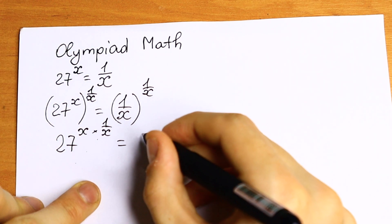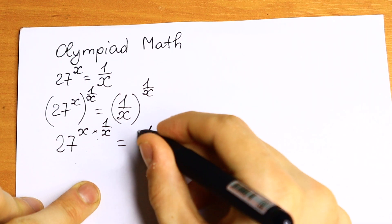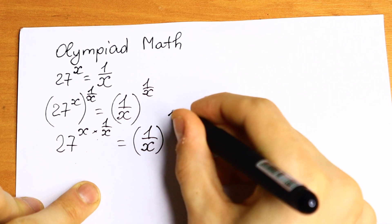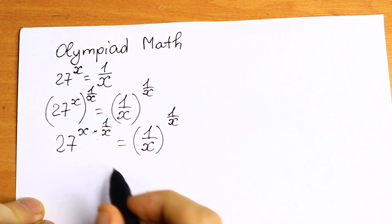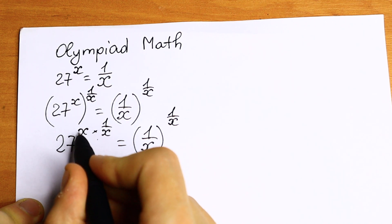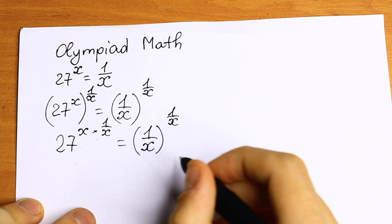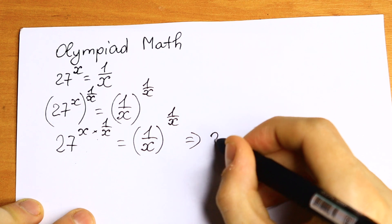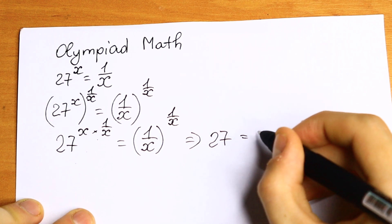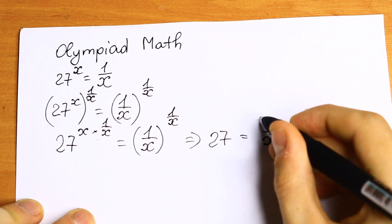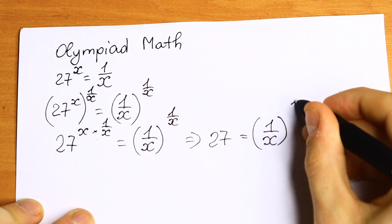So multiplying this we can do this. And let's write right side the same, 1 over x, and we raise to the power 1 over x. So if we multiply this, we will have x times 1 over x, it will be 1. So as you can see we will have on the left side only our 27 equal to 1 over x raised to the power 1 over x.